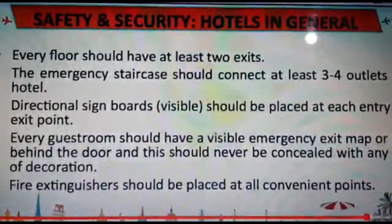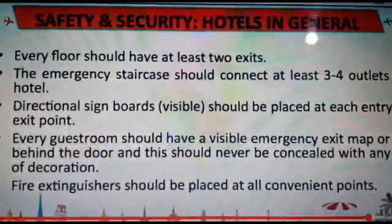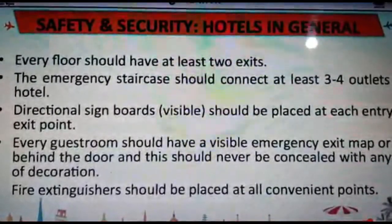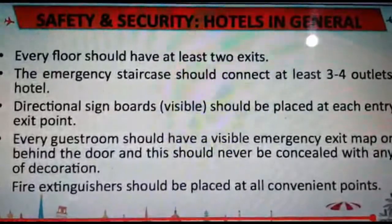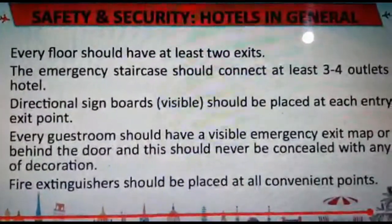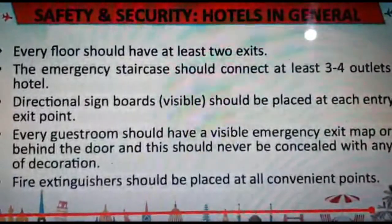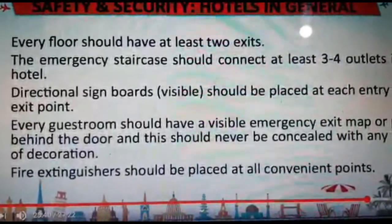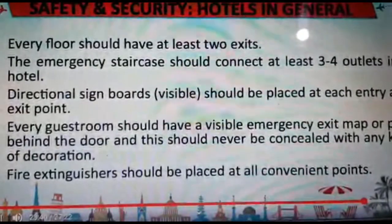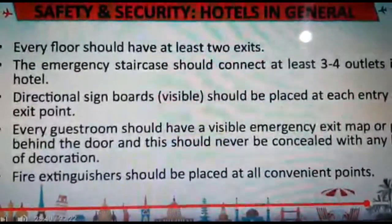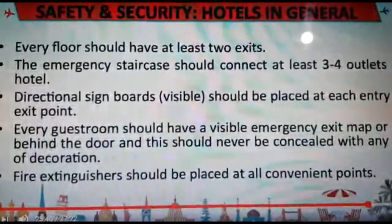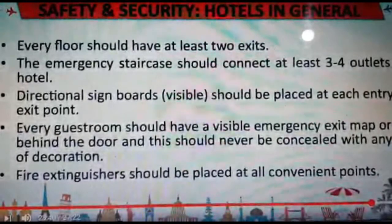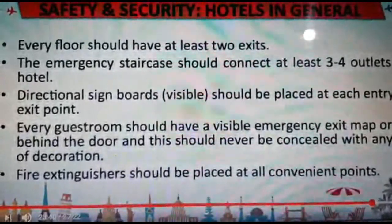Now let us understand and conclude what safety measures should be taken in hotels in general. Every floor should have at least 2 exits. An emergency staircase should be connected to at least 3-4 outlets in the hotel. Directional signboards, properly visible and highlighted, should be placed at each entry and exit point. Every guest room should have a visible emergency exit map and plan behind the door — that is very important.